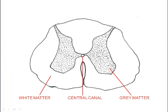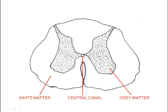The grey matter is the inner layer, and it consists of neurons that are unmyelinated. It contains association neurons, or interneurons, and cell bodies of motor neurons.